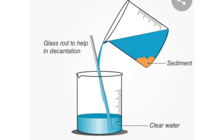The next step is decantation. When we slowly transfer the supernatant liquid into another beaker without disturbing the sediments, the process is called decantation. It is the process of pouring the clear supernatant liquid without disturbing the sediments.